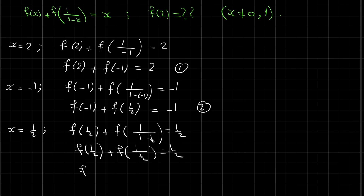And 1 over 1/2 is 2, so f(1/2) + f(2) = 1/2. This is the third equation.